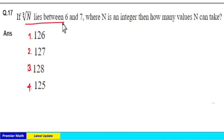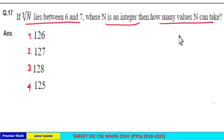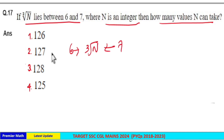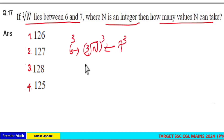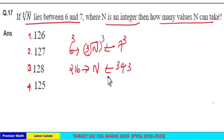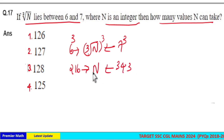If cube root of n lies between 6 and 7, where n is an integer, then how many values can n take? Since cube root of n lies between 6 and 7, we cube all parts: n lies between 6 cubed and 7 cubed, that is, between 216 and 343. So all integers between 216 and 343 have a cube root between 6 and 7.